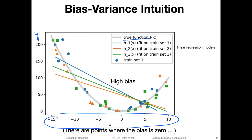However, the bias at some points is actually very low or zero — this is where the model does make a correct prediction. For example, if we give all these models an x value of five, they would actually make the correct prediction there. But everywhere else — most of the data range — the models are very far off from the true function. So this would be a high-bias model overall.